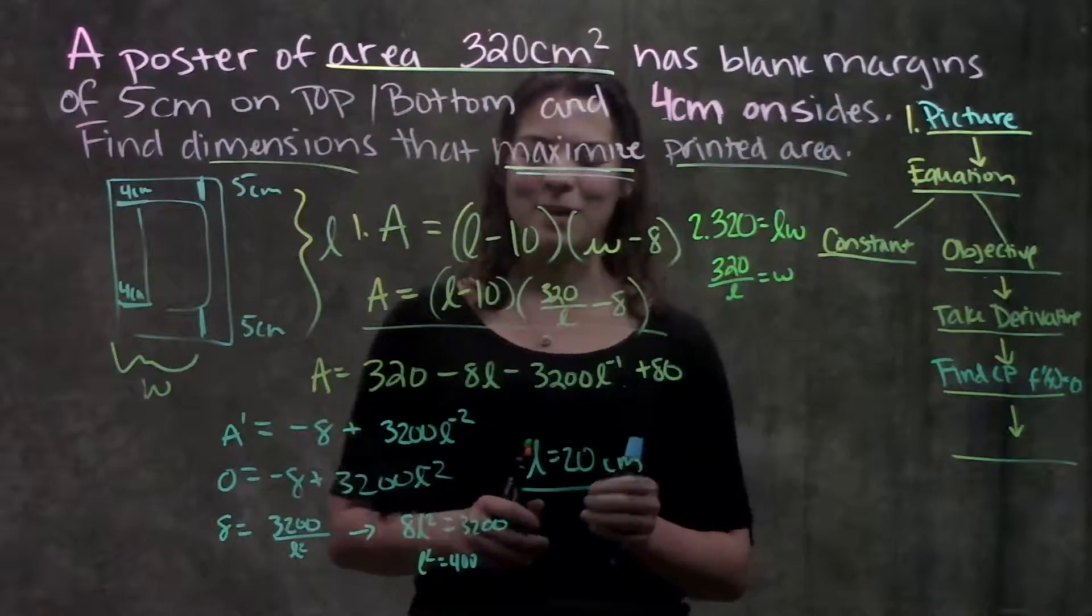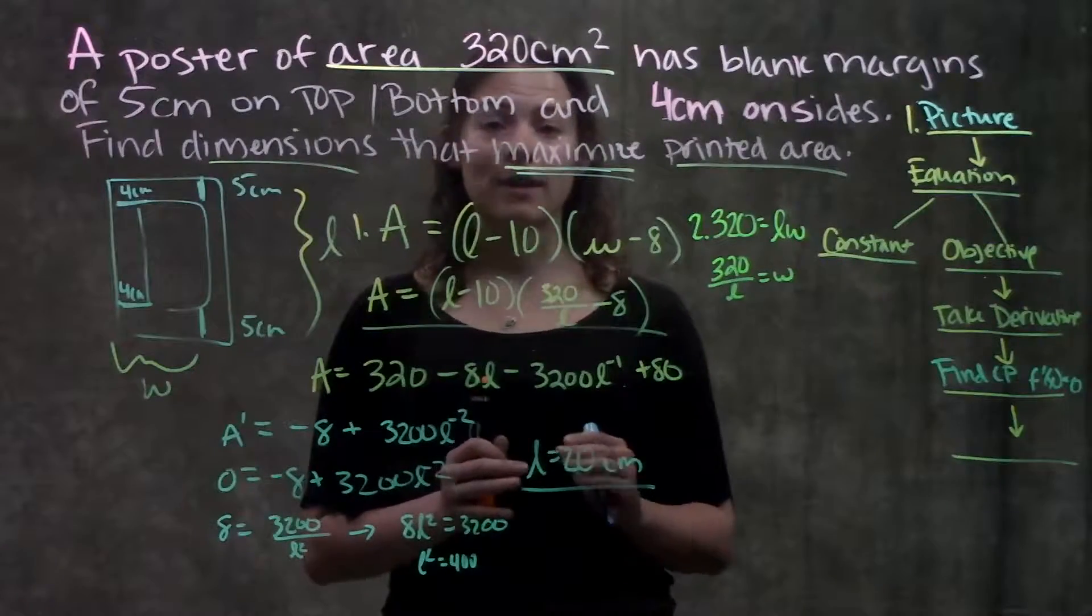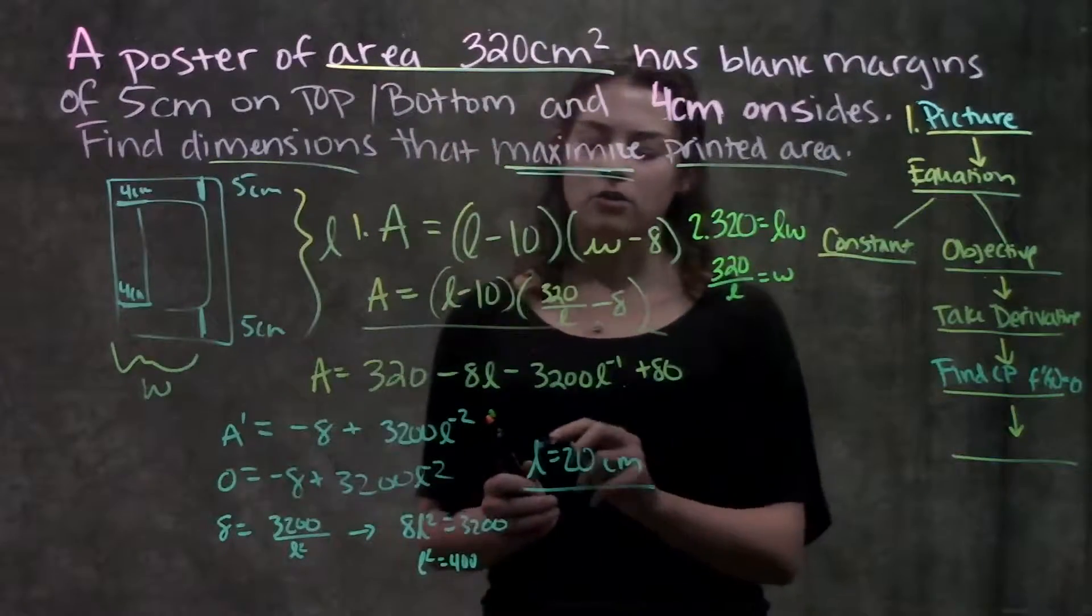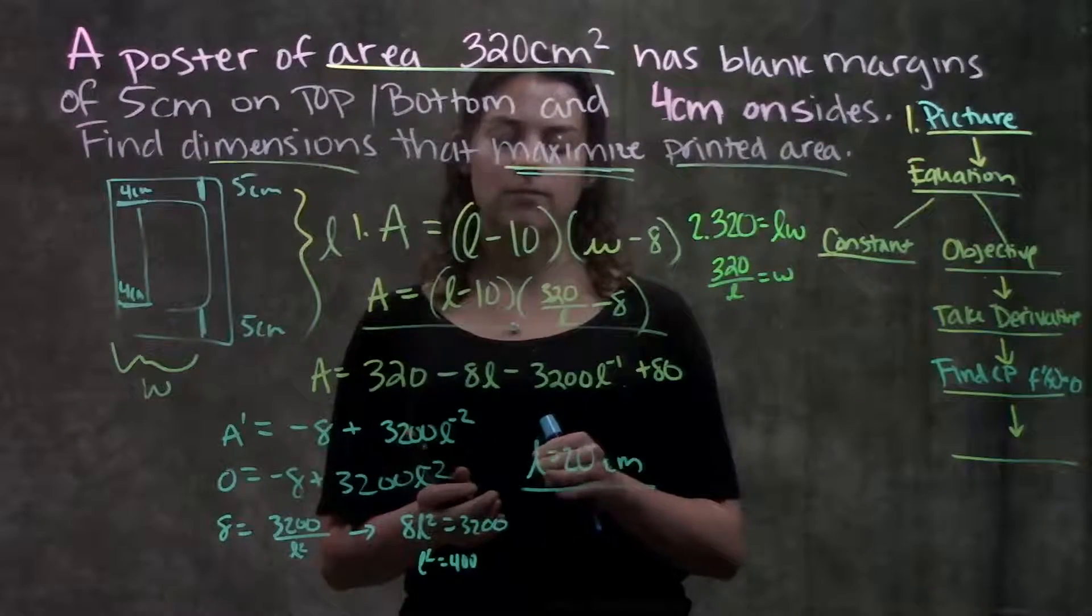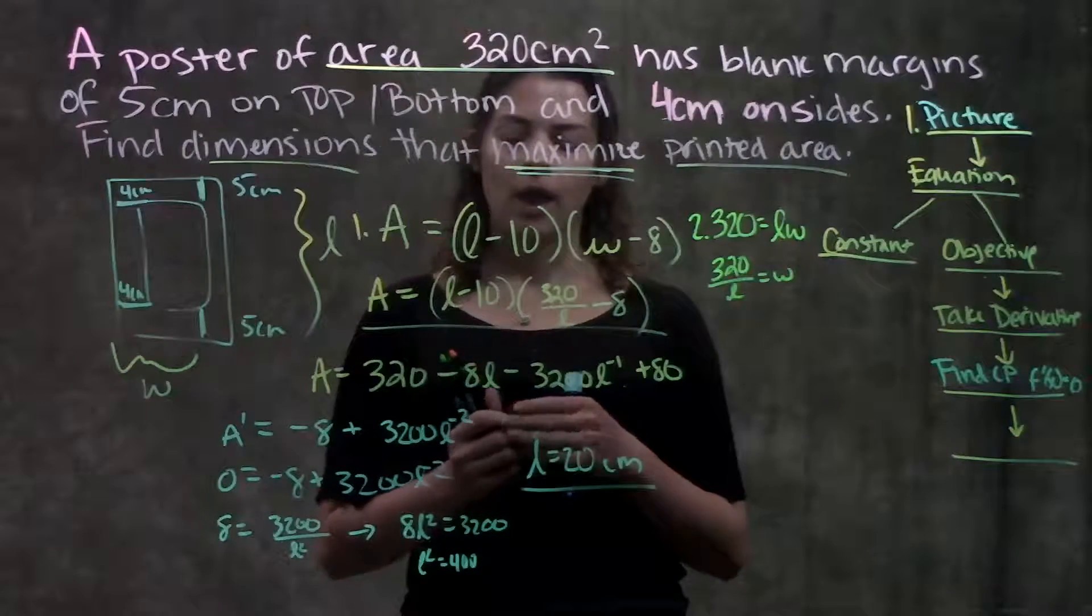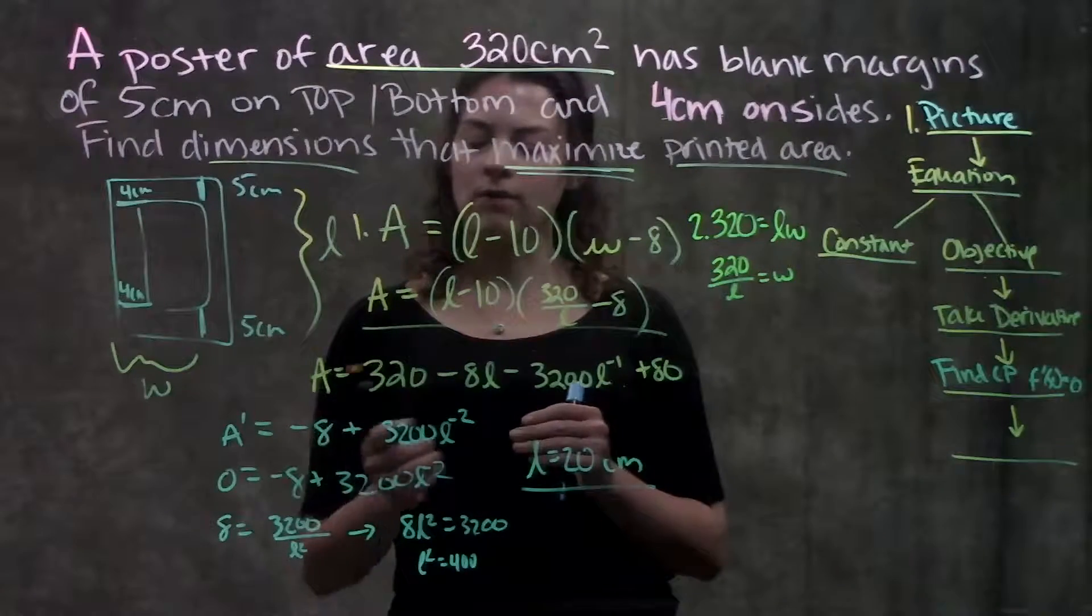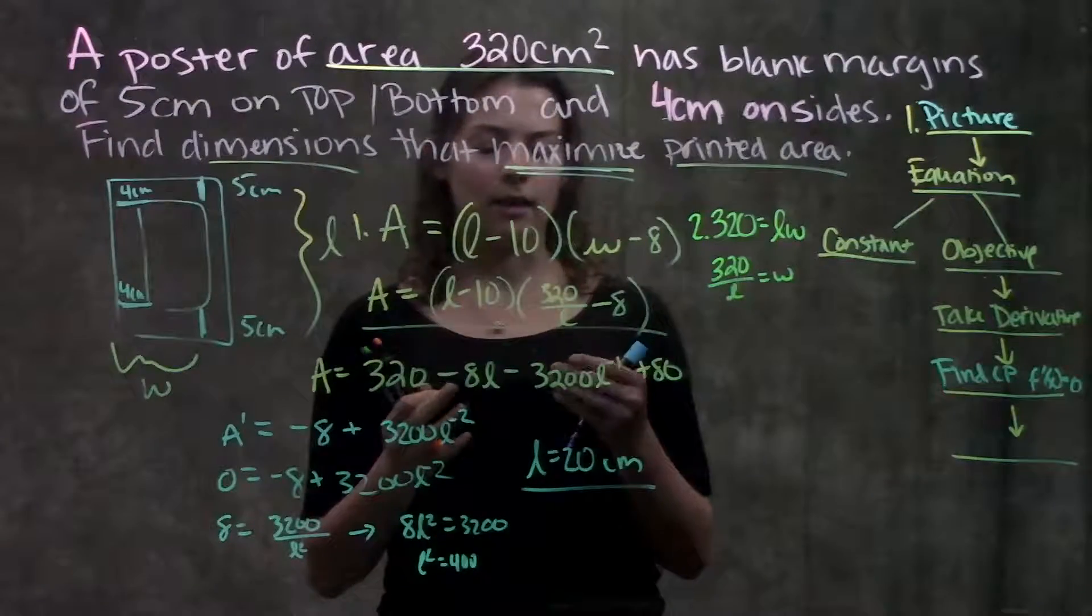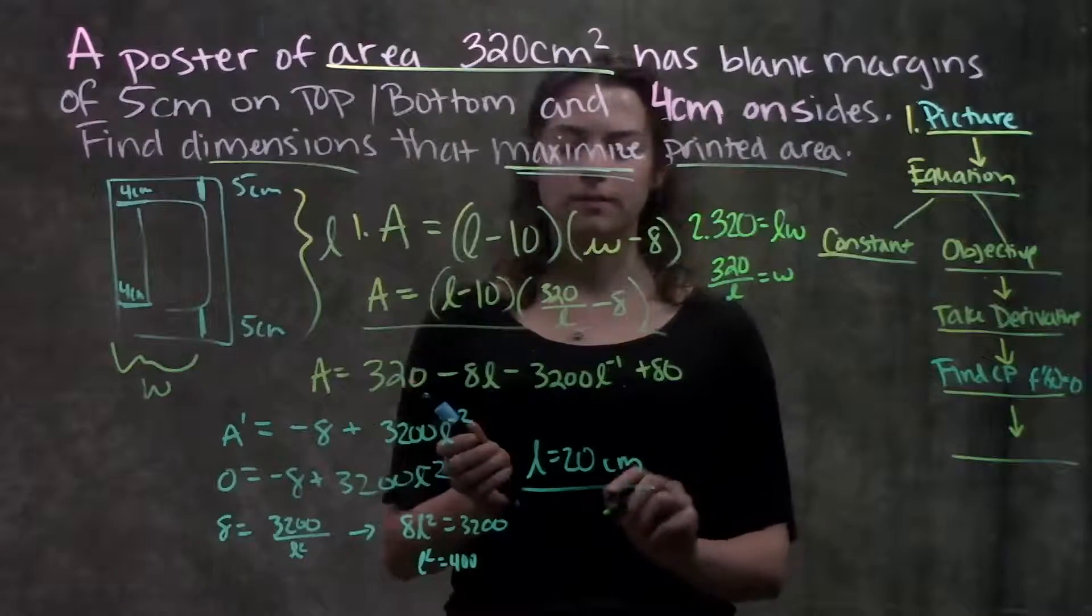Alright, good stuff. Almost there. So we solved for our L value, but we first want to verify that this is a maximum. We don't want to solve for the minimum value. So remember, there's a couple different ways how we can verify that this is the maximum value of this function. One way that we could do it is we could take the second derivative of this function, and plug this value in, and see if it's positive or negative. So let's do that.